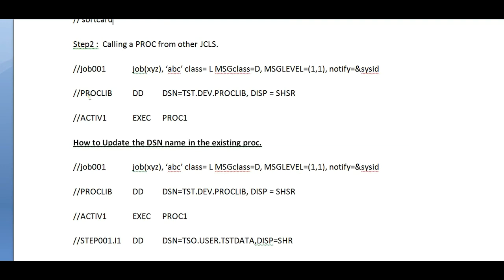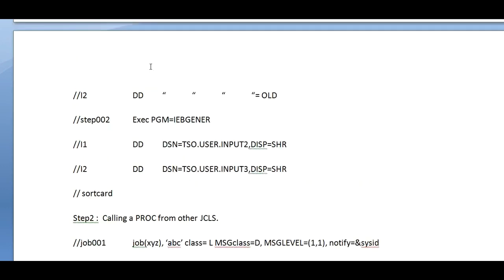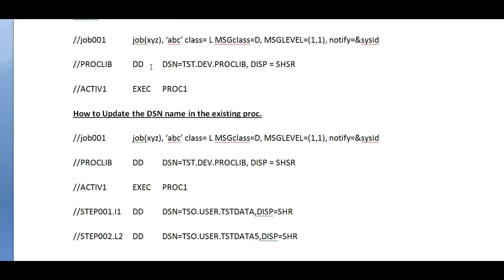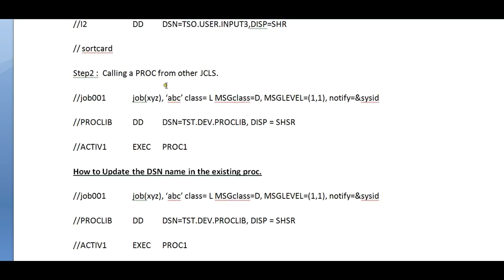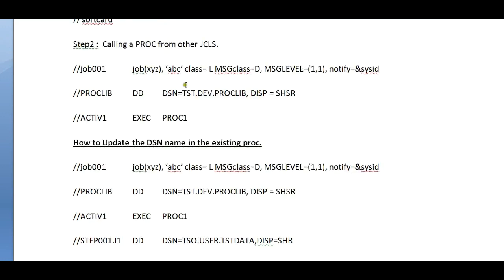Now, calling a proc from other JCLs. I have a proc defined, and I need to call this proc from another JCL. You need to have your job card, then the proc lib, then you call the proc. That's it — just give the proc name. The main important thing is you need to have a proc library defined here. As noted, you cannot have multiple proc libraries defined.